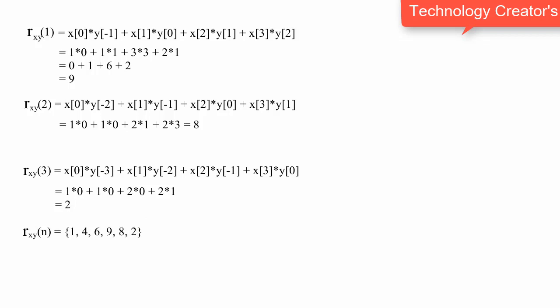So the combined sequence correlation is 1, 4, 6, 9, 8, and 2. And the origin corresponds to 6 at the position 0.